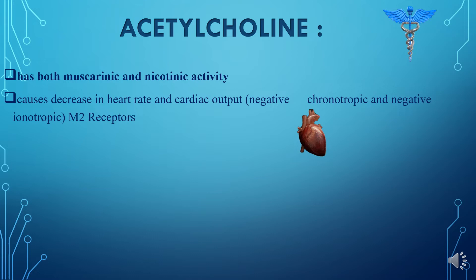A chronotropic effect refers to the electrical conduction of the heart — whether it increases or decreases. If electrical conduction increases, it shows positive chronotropic effect and increases the heart rate. If electrical conduction decreases, it shows negative chronotropic effect and decreases the heart rate.